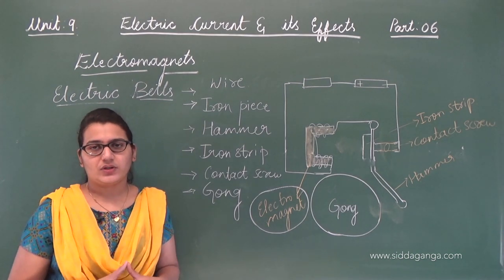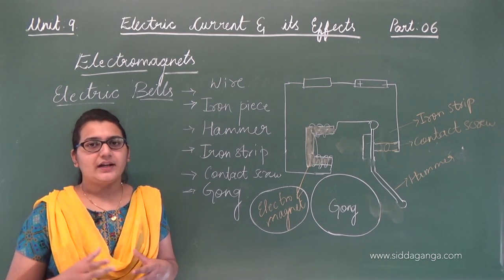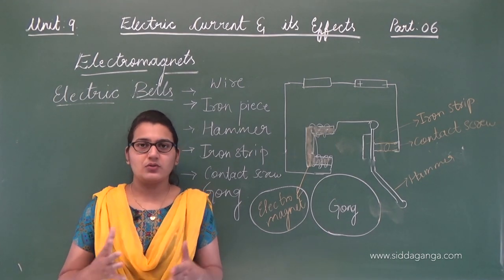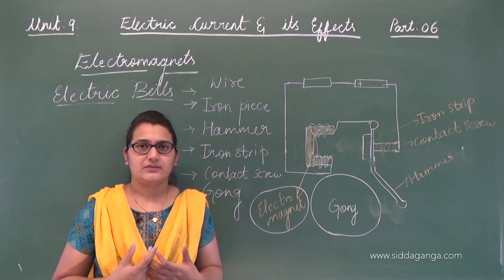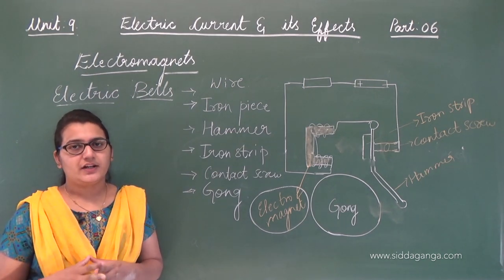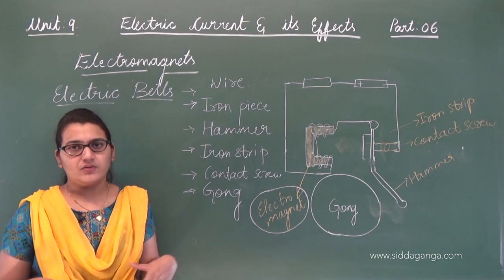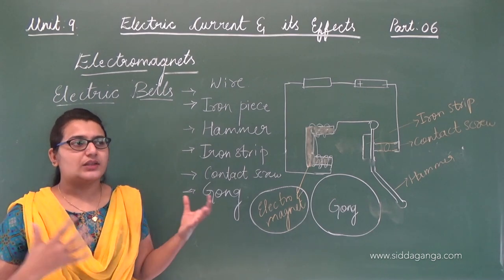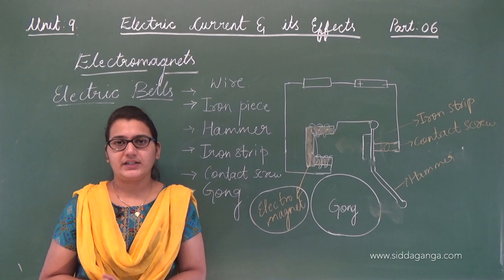We also learned the magnetic effect of electric current, first shown by Oersted — even without a magnet, electric current produces a magnetic field around the circuit. Under magnetic effect, we studied electromagnets, which produce a magnetic field due to electric current, attracting iron fillings and other materials. Finally, we studied the working of the electric bell, which is based on the electromagnet. Thank you.